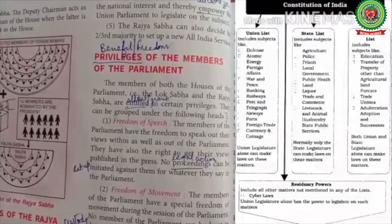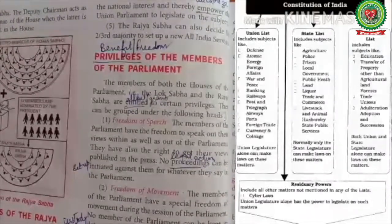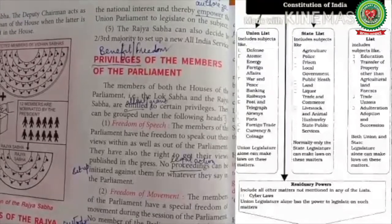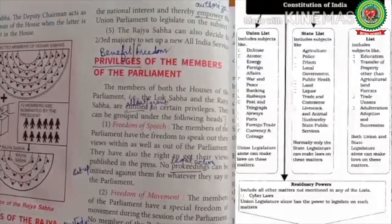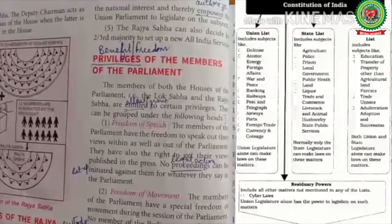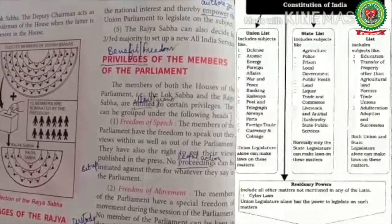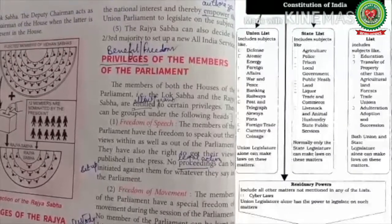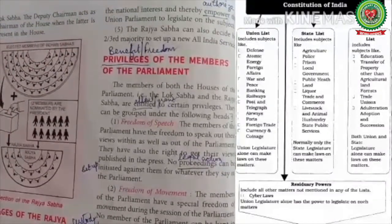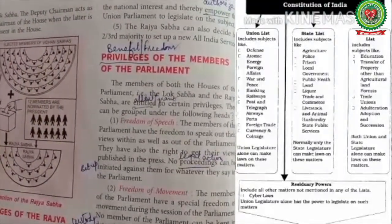The State List contains subjects under which the legislature of a state may make laws — public order, police, public health and sanitation, hospitals and dispensaries, etc. The Concurrent List includes subjects that give powers to both the central and state governments — subjects like education, population control and family planning, criminal law, protection of wildlife, etc. If the Rajya Sabha passes a resolution with a two-thirds majority of present and eligible voters declaring a subject of the state list to have national importance, parliament acquires the power to legislate on that subject.